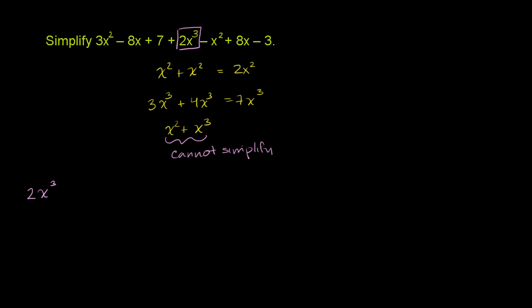So we have the 2x to the third. Then let's look at the x squared terms. We have 3x squared over there, and then we have a negative x squared. If we want to simplify it, we can add these two terms. So we can add 3x squared to negative x squared. I'm just rearranging it, putting the like terms next to each other so it'll be easy to simplify.